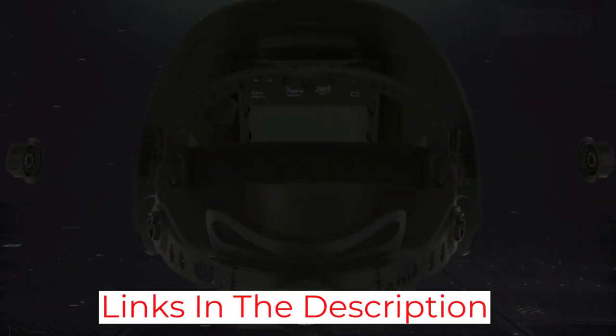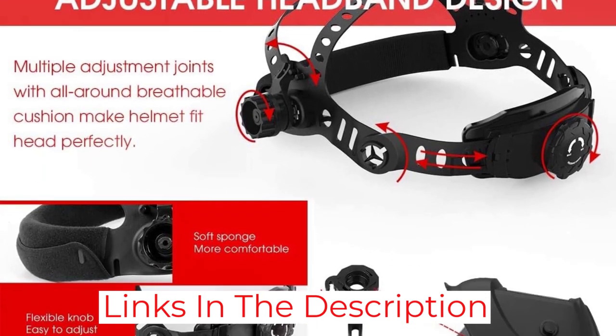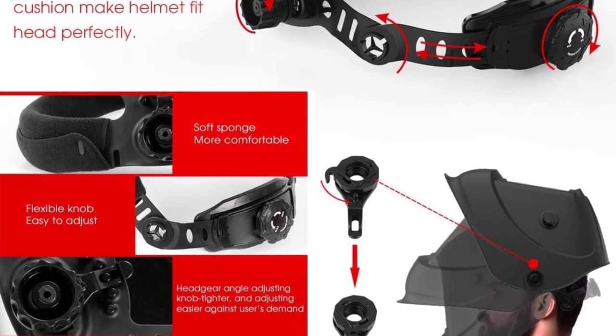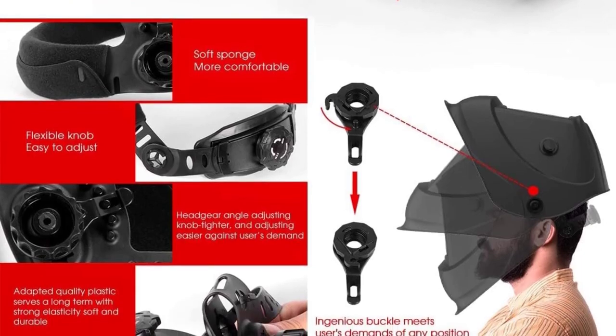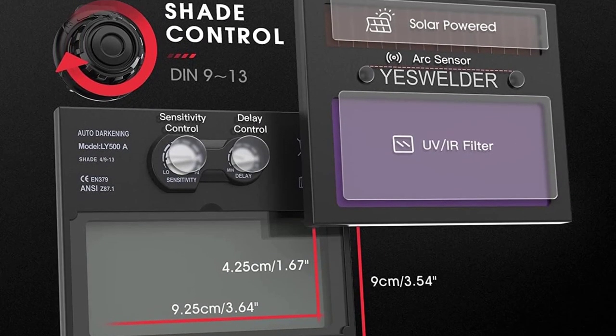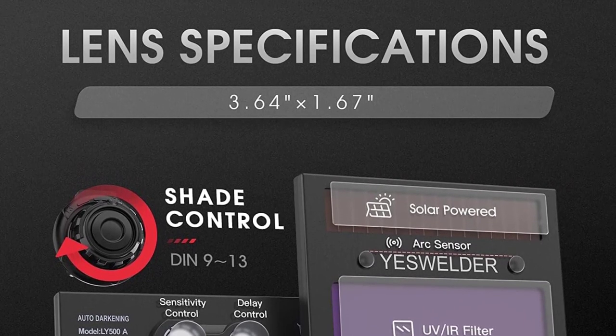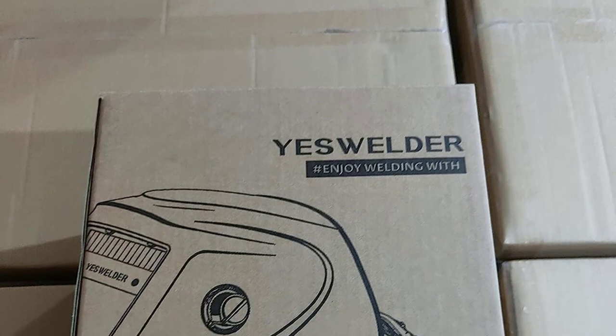The settings and adjustments of the helmet are straightforward, thus making it convenient to use. The True Color technology of the product offers improved visibility and reduced strain. Users can operate this product either through solar-charging lithium-ion batteries or standard batteries available in the market.